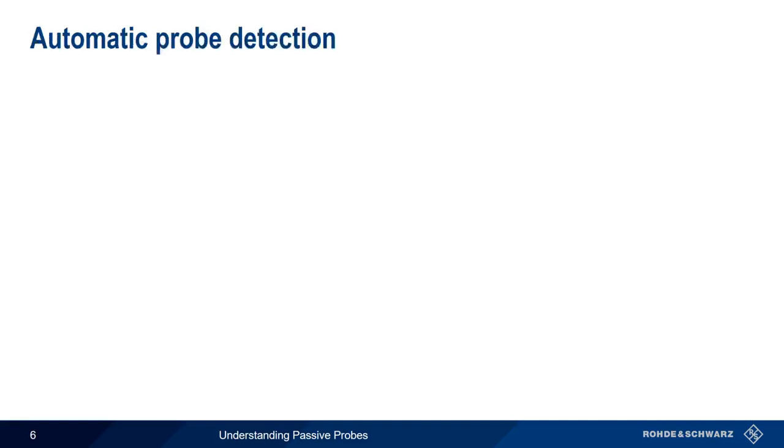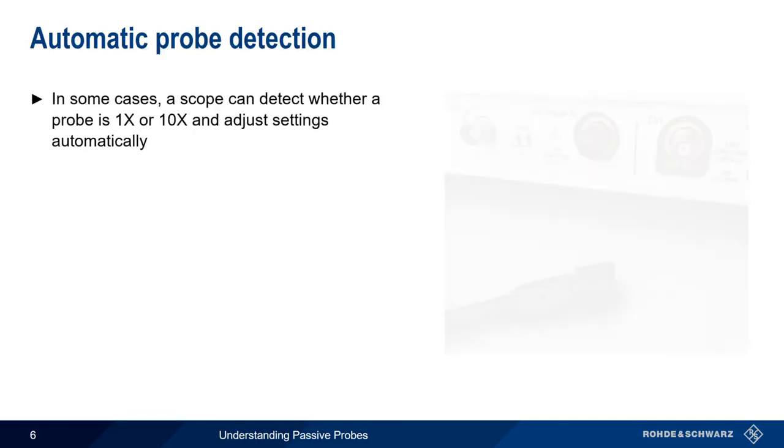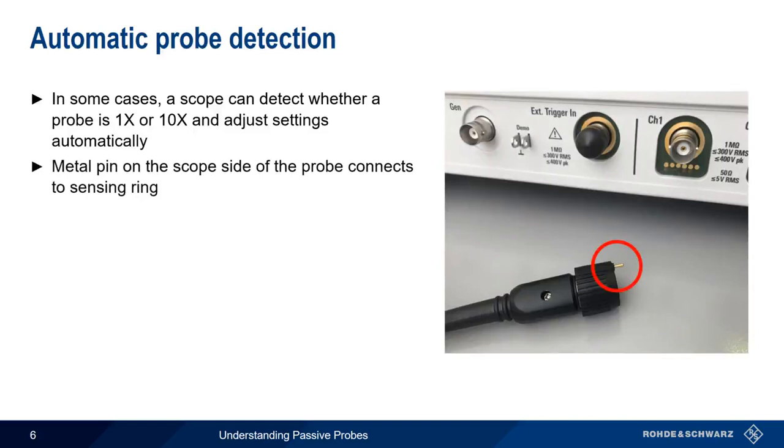So how does the scope know if we're using a 1x or 10x probe? In some cases, a scope can detect whether a probe is 1x or 10x and adjust its settings automatically. How? Many 10x probes have a metal pin on the scope side, and if this pin contacts a sensing ring on the scope input, the scope knows that a 10x probe is being used.